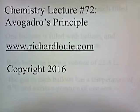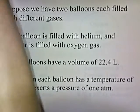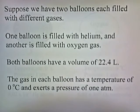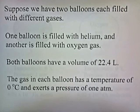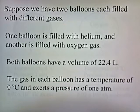Chemistry lecture number 72: Avogadro's Principle. Suppose we have two balloons each filled with different gases. One balloon is filled with helium and another is filled with oxygen gas. Both balloons have a volume of 22.4 liters. The gas in each balloon has a temperature of zero degrees and exerts a pressure of one atmosphere.